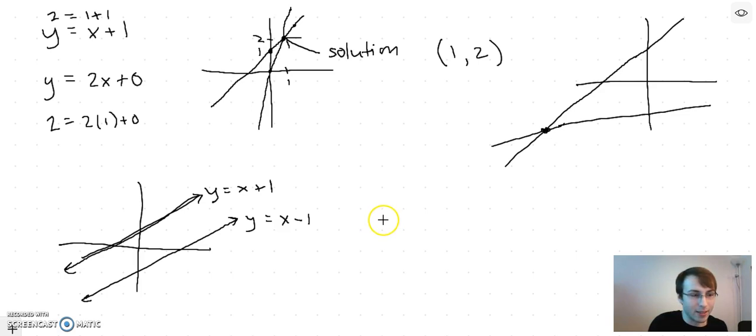Yeah, so parallel lines means no solutions, usually, unless the lines are actually the same line, in which case there are infinitely many solutions. An example of this would be, we'll keep this line y equals x plus 1, and then think about the line...